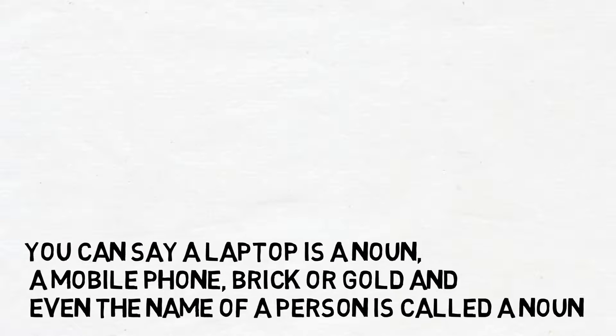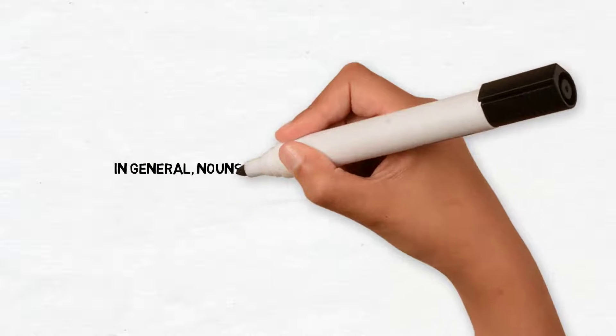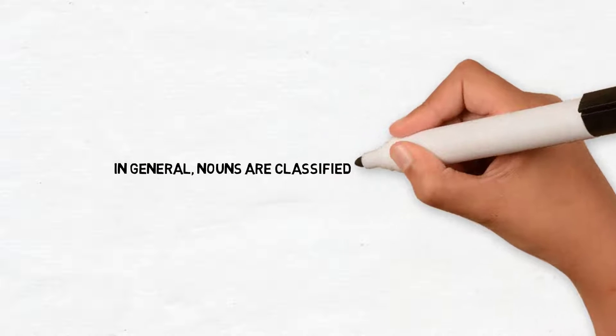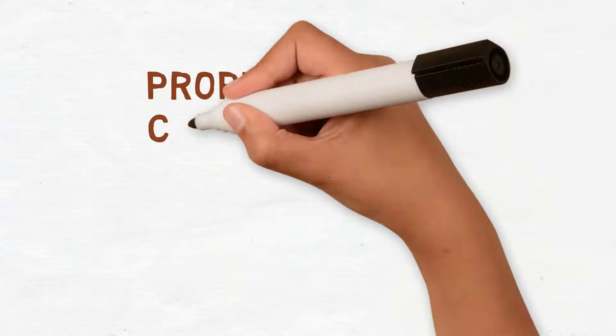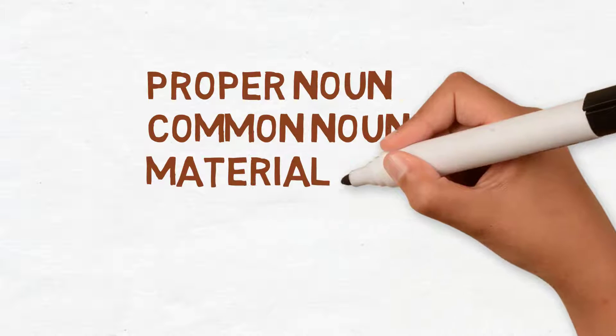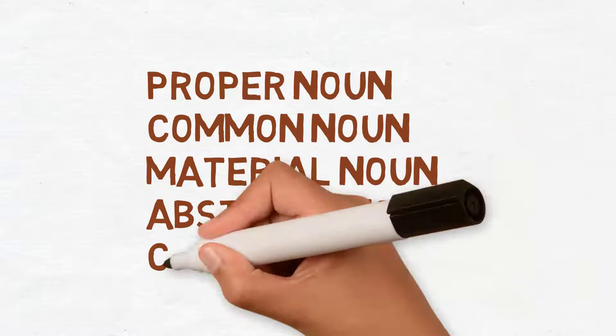So, let me show you the classifications of noun. In general, nouns are classified into five categories: proper noun, common noun, material noun, abstract noun, and collective noun.